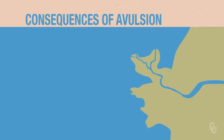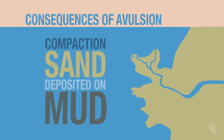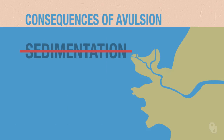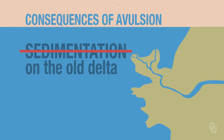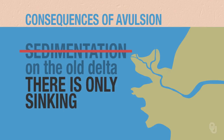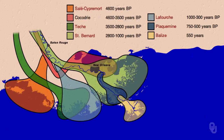Why does the old delta lobe sink? Remember that you always have compaction on deltas because you have sand deposited on top of mud. If you're no longer getting sedimentation on the old delta — because all the sediment is going to the new delta — you only have sinking, and eventually the old delta lobe will sink while a new delta lobe forms. This map shows the positions of seven previous lobes on the Mississippi River. In the last 4,000 to 5,000 years, the Mississippi has avulsed seven times, with new lobes forming. This is a very common process that operates on the Mississippi Delta.